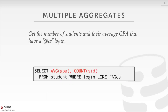You can do multiple aggregates in the same query. Here we're doing AVG GPA and COUNT for students with the '@cs' login, and computing their average GPA. You write both aggregation functions in the SELECT clause and you'd get an answer with both values.